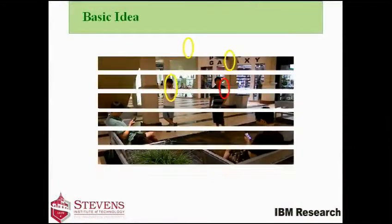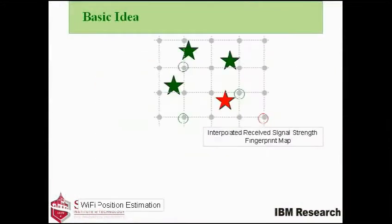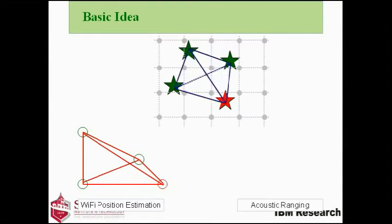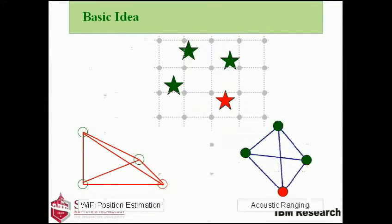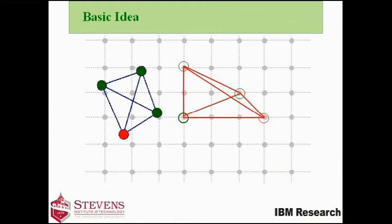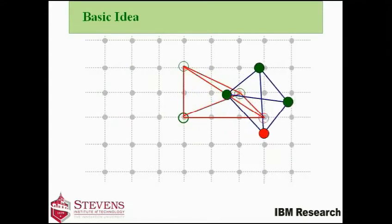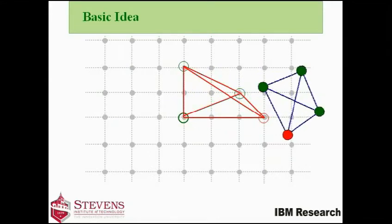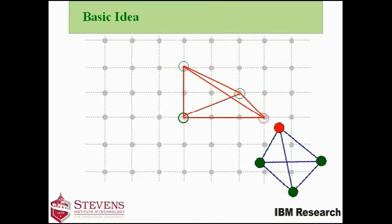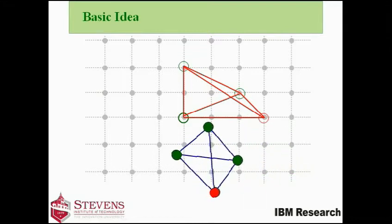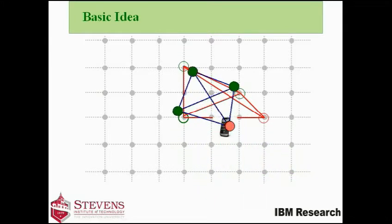Our basic idea is to involve smartphone peers to obtain relative distance and reduce Wi-Fi based localization error. The accurate distance constraints in the rigid graph force the new location estimate of the target to approach its real location, consequently reducing large localization error.